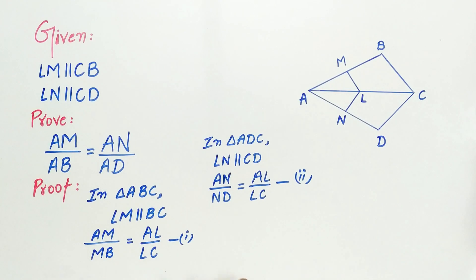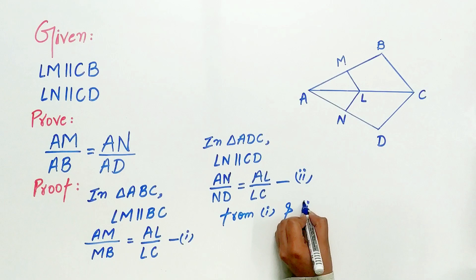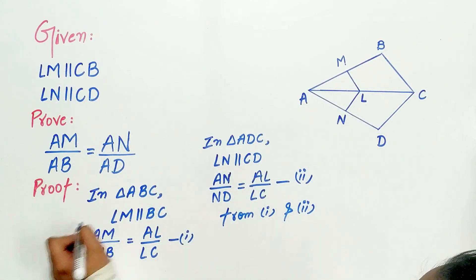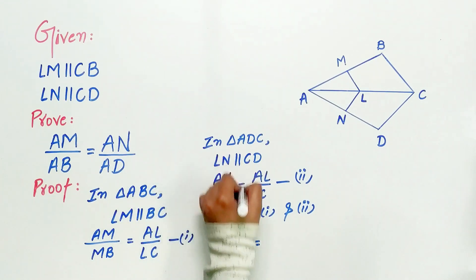Now look carefully, both the equations. From 1st and 2nd, AM by MB is equal to AN by ND.